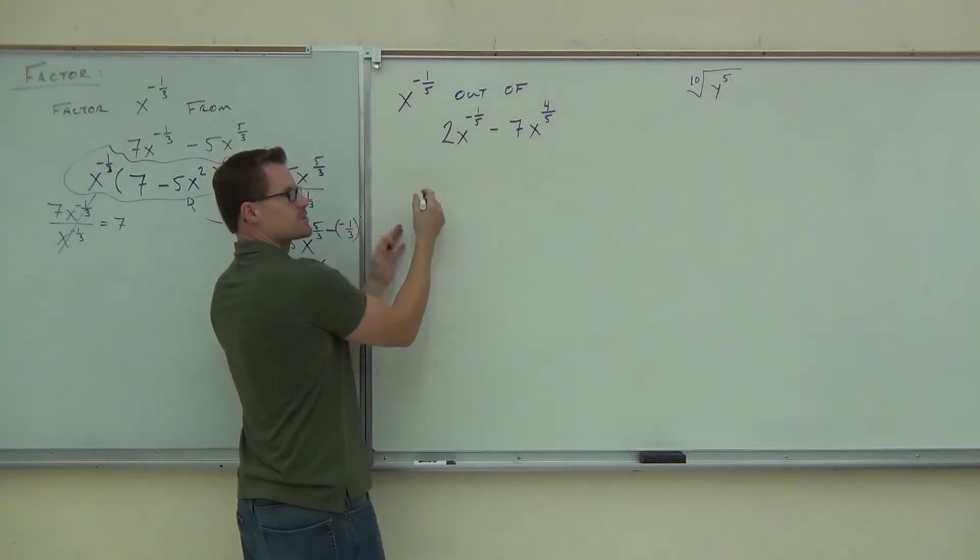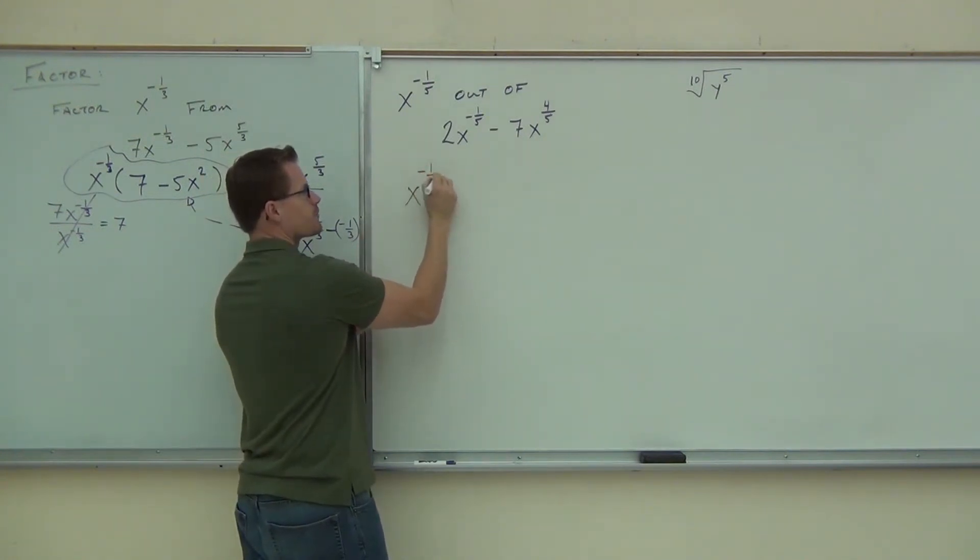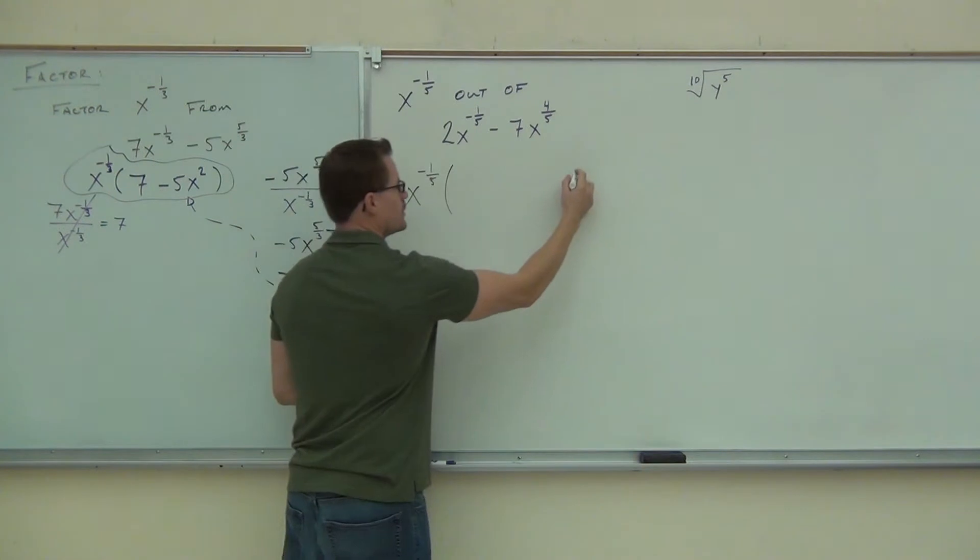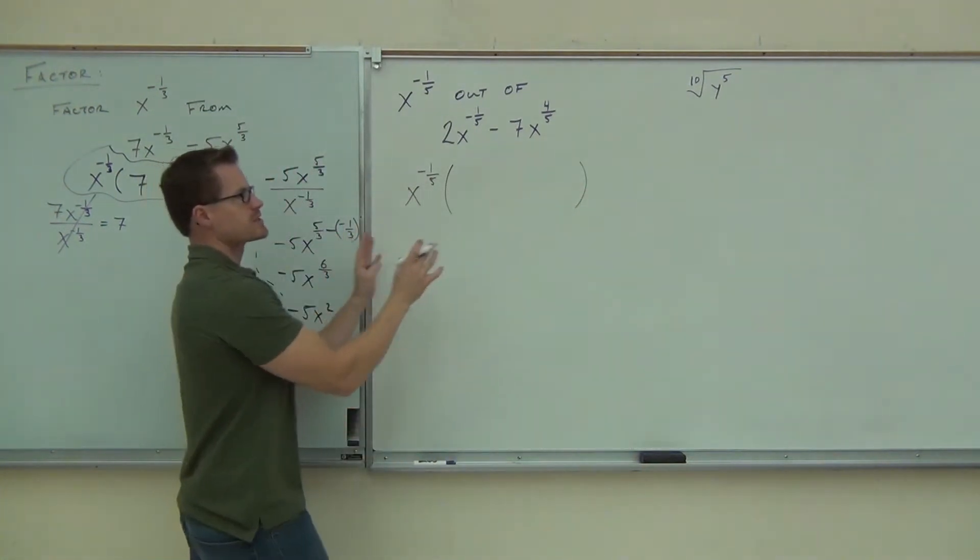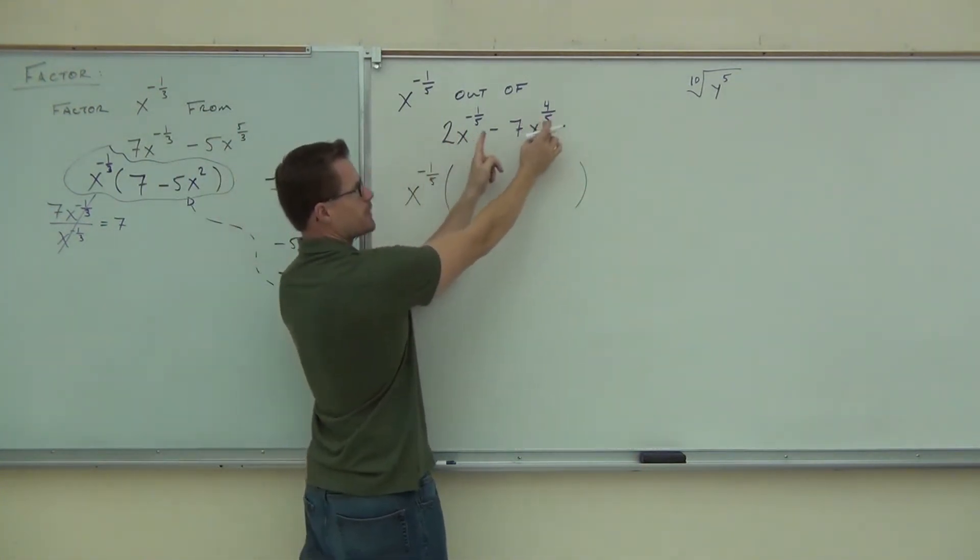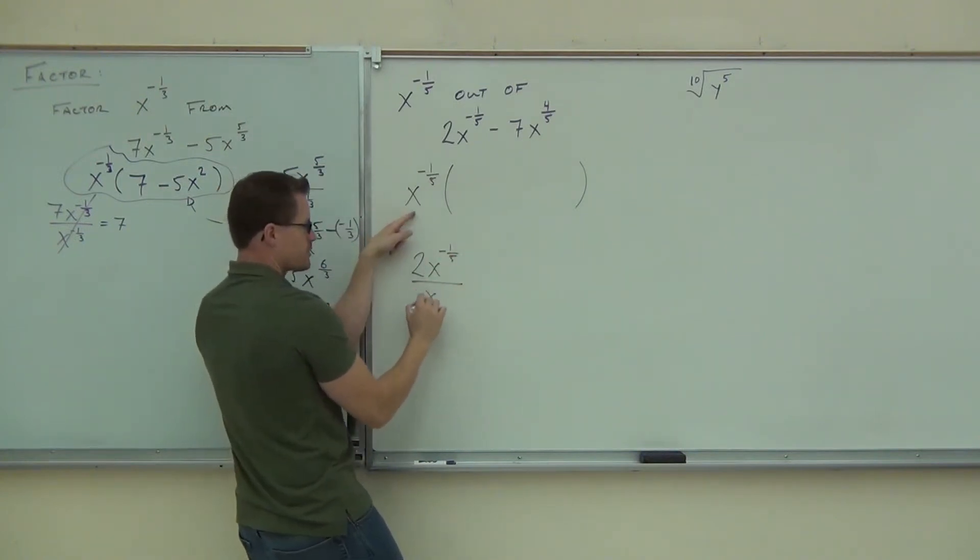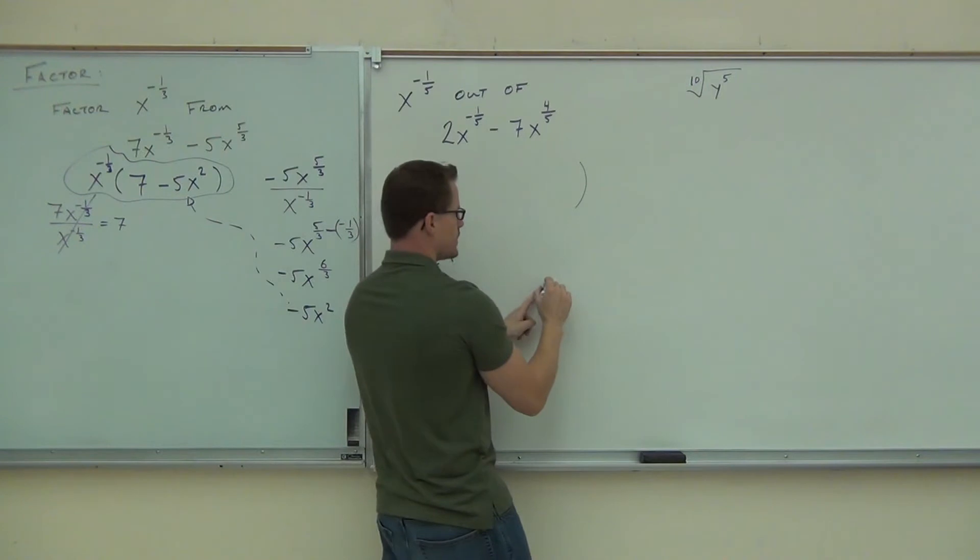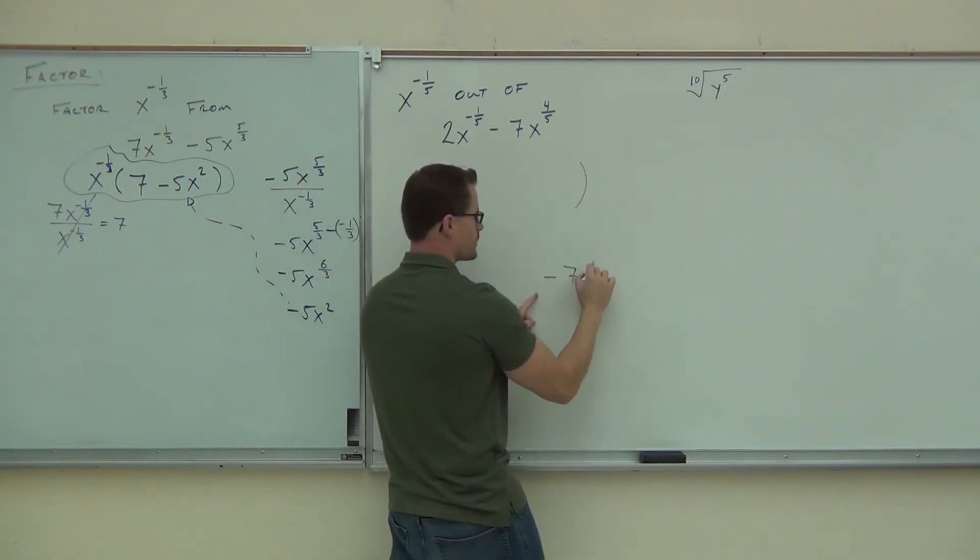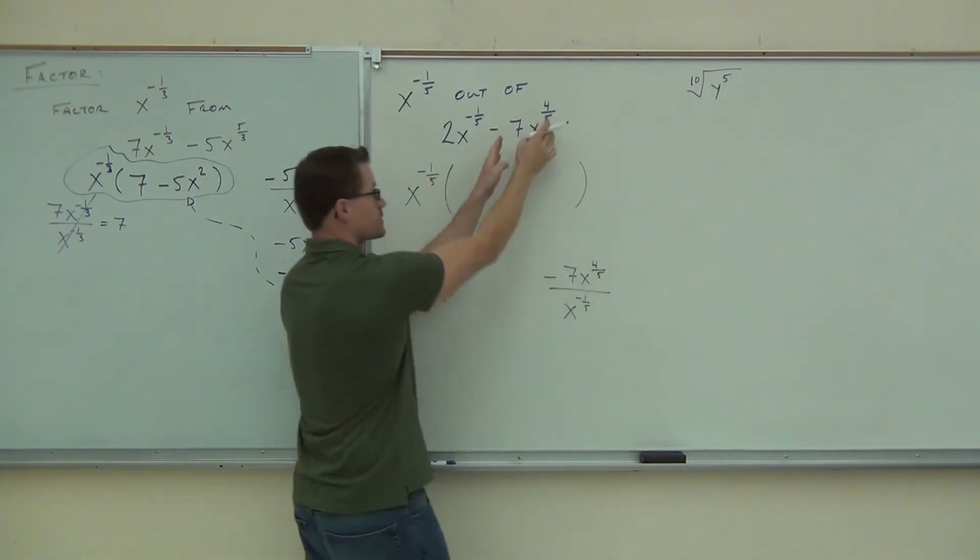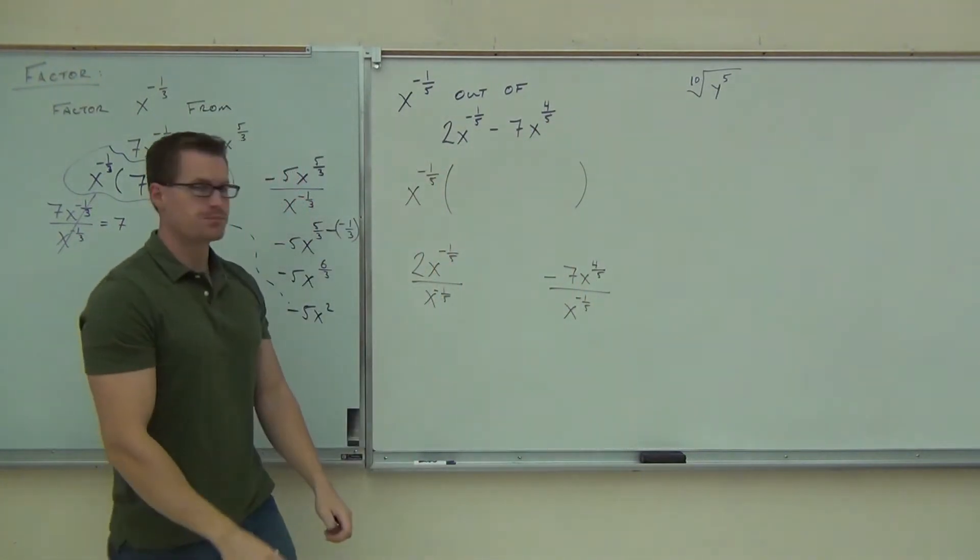So when we factor out, that means we're dividing term by term. So we're factoring out x to the negative one-fifth. Whatever you're factoring out, whatever they tell you, that's going to go in front of your parentheses. On the inside, we get those two pieces of information by taking our first term and our second term and dividing by what we're factoring. So 2x to the negative one-fifth over x to the negative one-fifth, and also negative seven x to the four-fifths over x to the negative one-fifth.